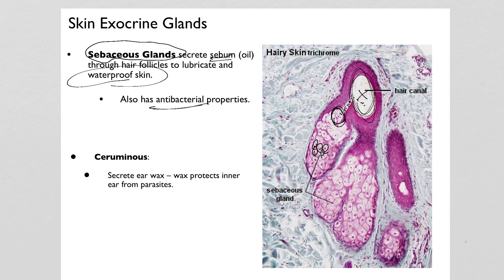Sebaceous glands also have mild antibacterial properties. The same general concept exists in ceruminous glands, which produce ear wax and are only found in the ears — essentially the same idea but with a denser, thicker, waxier secretion. The best explanation for ear wax is that it helps keep parasites and insects out of the ear canal, as they're less likely to venture in if sticky ear wax is present.